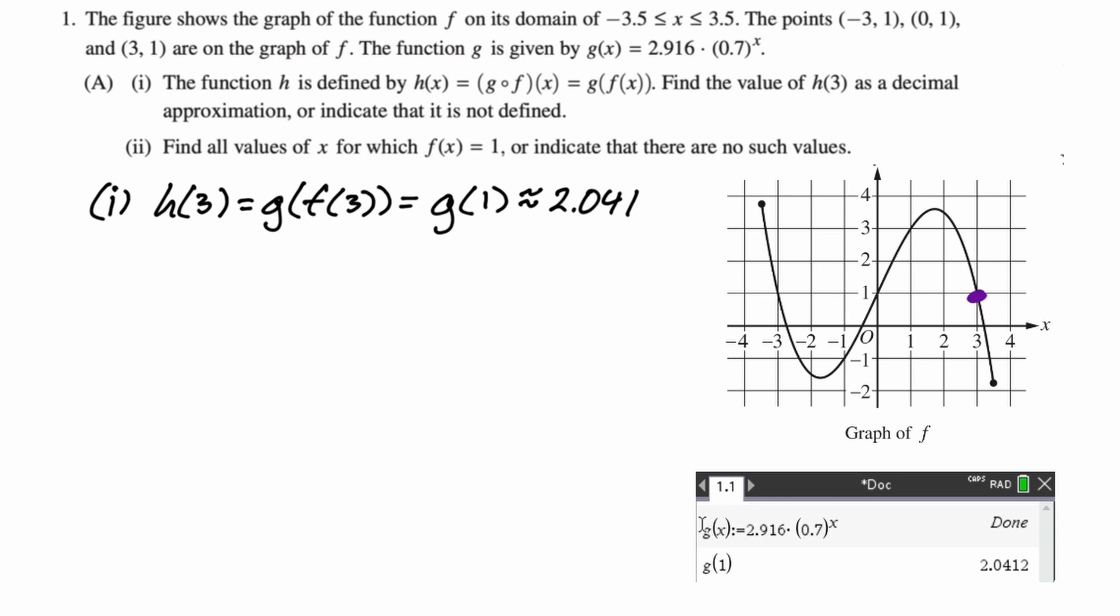Part 2, find all values of x for which f of x equals 1 or indicate that there are no such values. Kind of a weird problem because they literally gave us three ordered pairs that have 1 as the y value, but I think they're testing to see if you know what function notation is. So we're trying to solve f of x equals 1 that pretty clearly from the graph and from the given information communicates three different x values. We have x is negative 3, we have x is 0, and we have x is positive 3. So those are our three places where f of x equals 1.